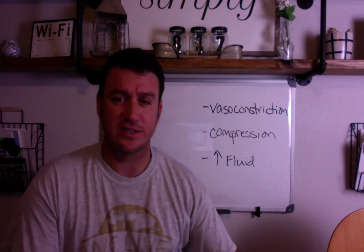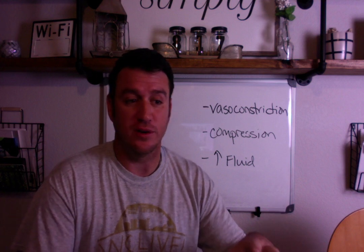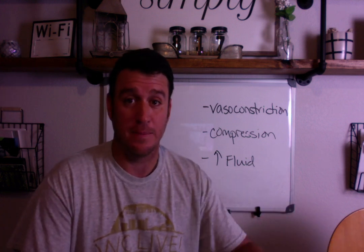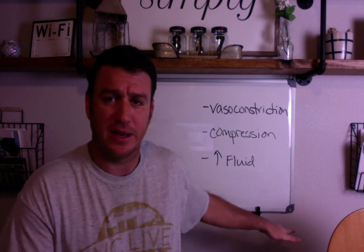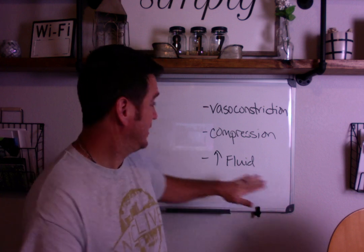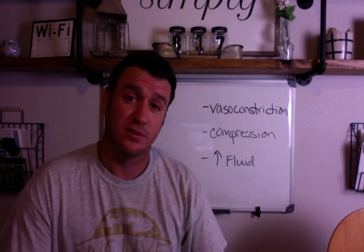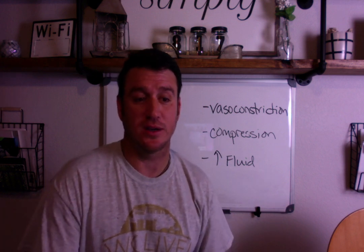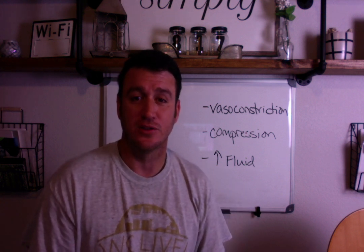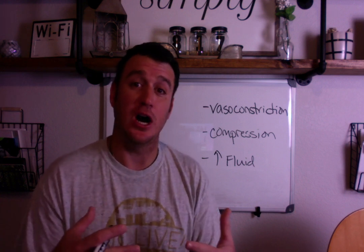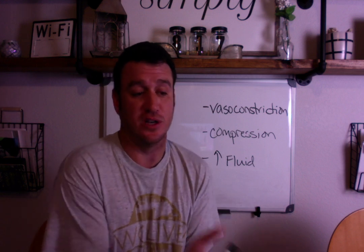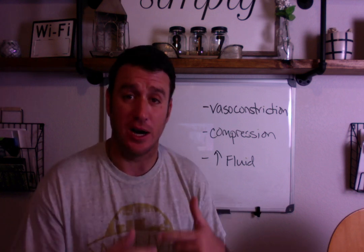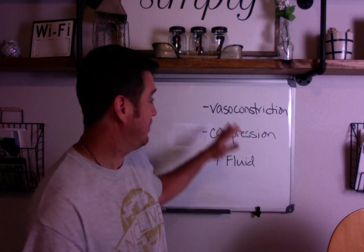We can also put obstruction on the list — if you have an obstruction of any vessel, pressure goes up prior to it. But we're not going to focus on that today. These three — vasoconstriction, compression, and increased fluid — apply to all vessels. Now let's talk specifically about pulmonary capillaries, because when we talk about pulmonary hypertension, we're talking about increased pressure in the pulmonary capillaries. So now let's talk about why every patient on mechanical ventilation might have some level of pulmonary hypertension and relate it back to all three of these.